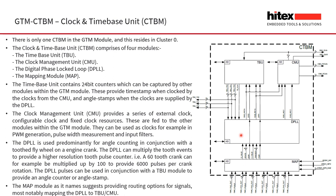The DPLL can multiply the tooth events to provide a higher resolution tooth pulse counter. For example, a 60-tooth crank can be multiplied up by 100 to provide 6000 pulses per crank rotation. The digital phase-locked loop pulses can be used in conjunction with the TBU module to provide an angle counter or angle stamp. Pulses provided externally from a TIM module can be filtered, then routed via the mapping module from the TIM into the digital phase-locked loop, which can then provide clock pulses for the time-based unit.